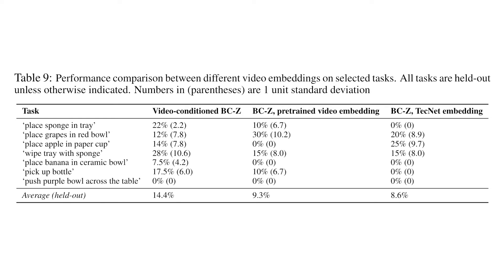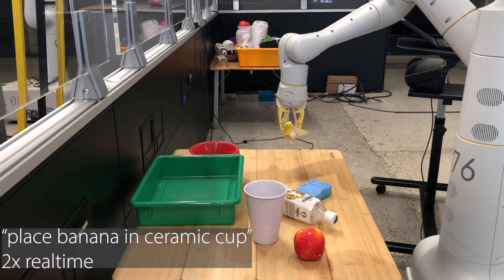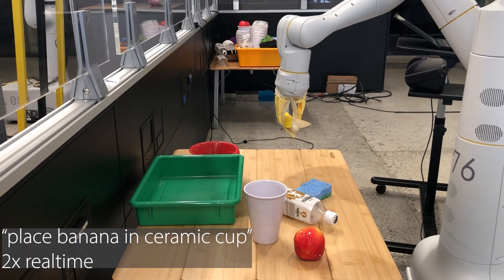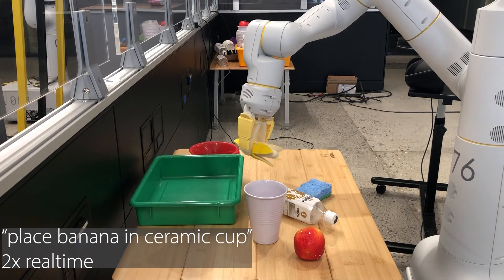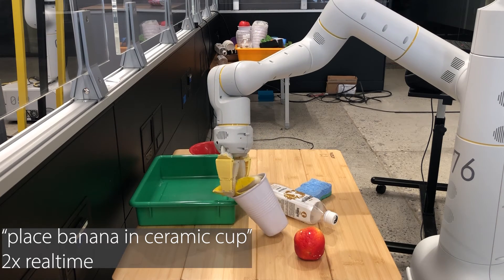One limitation of this work, which we verify through experimental ablations, is that although the policy trained on video embeddings can do a few holdout tasks, it does not generalize as well overall on both holdout videos of training tasks or holdout videos of unseen tasks. Here is another failure case: the policy nearly completes the task, but struggles to finish the last action of letting go of the object.